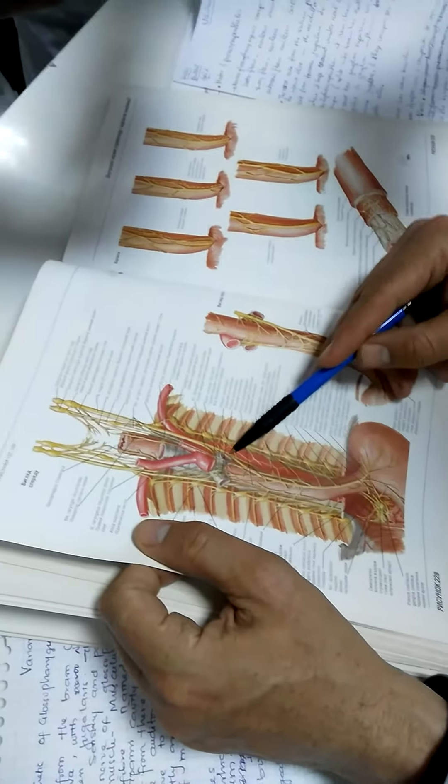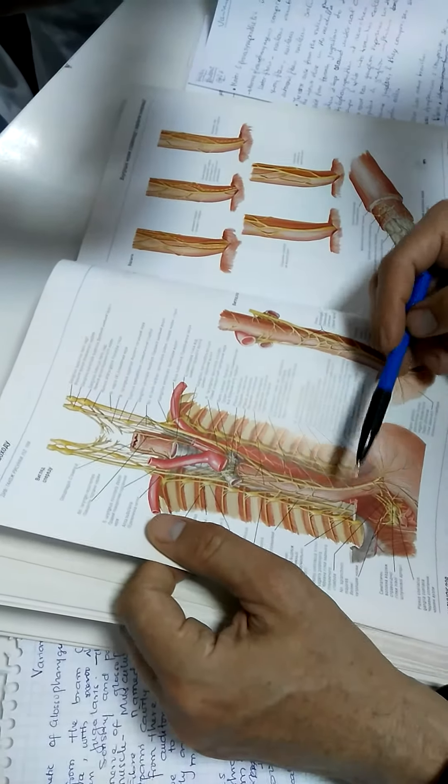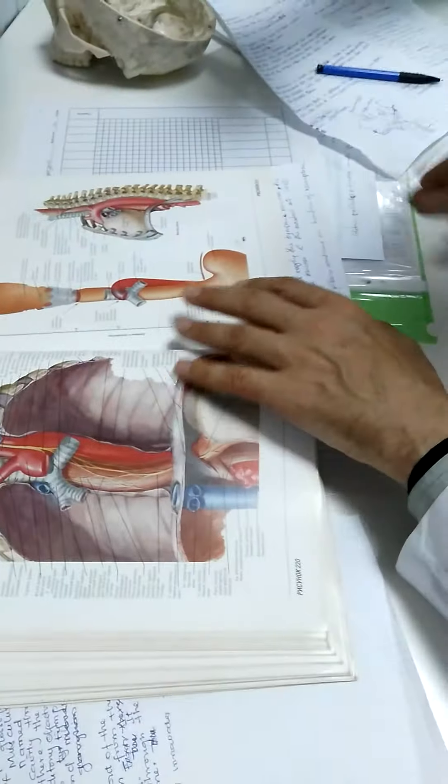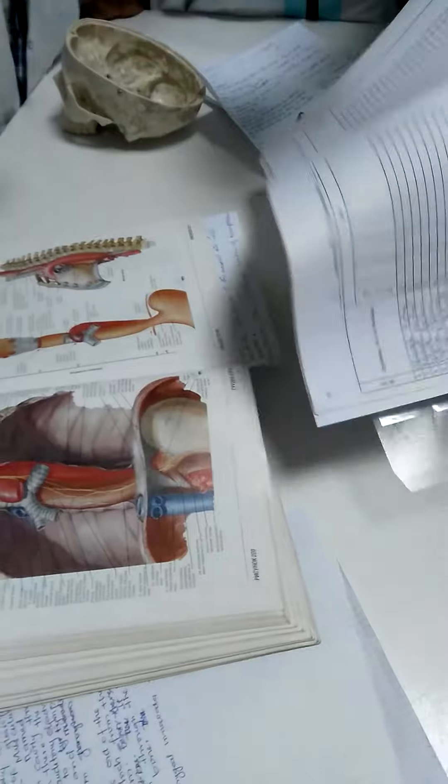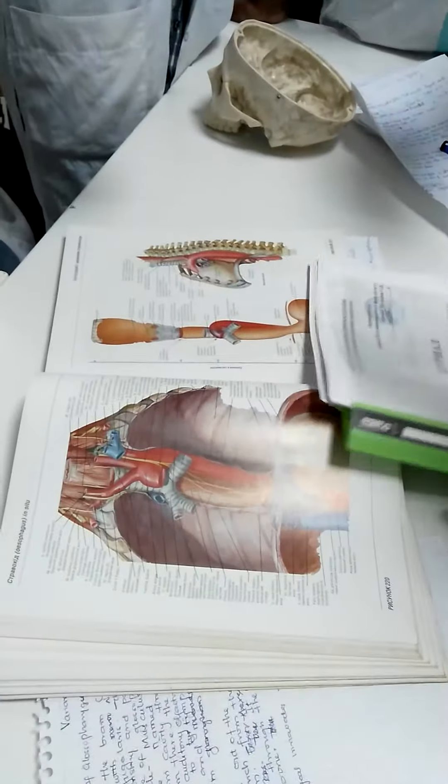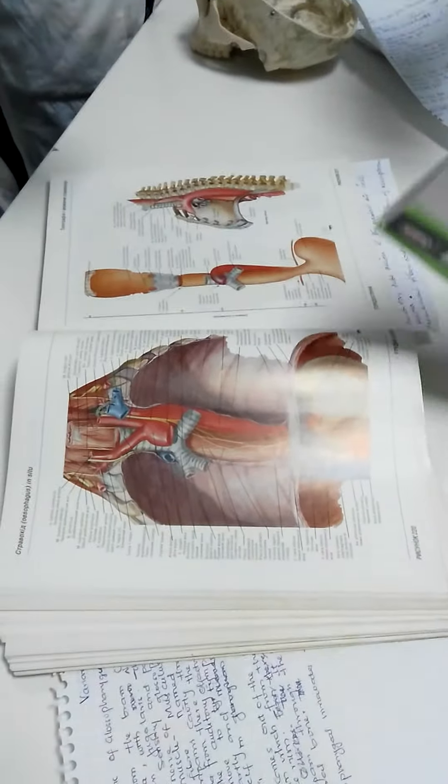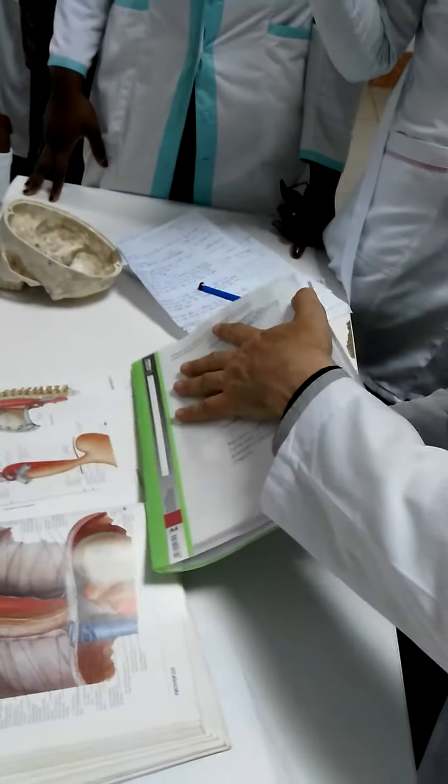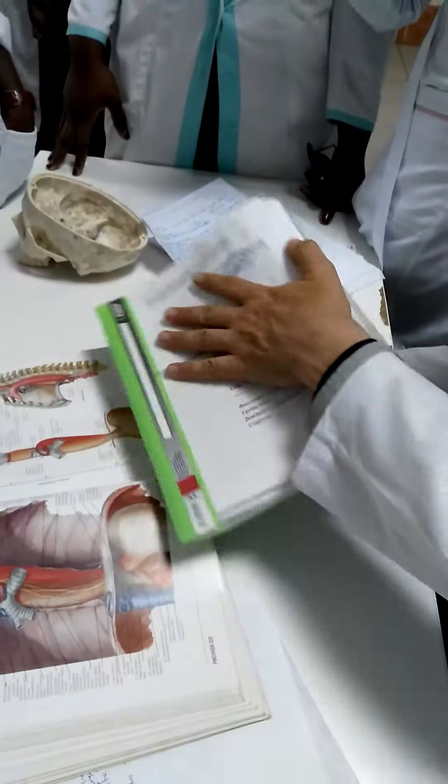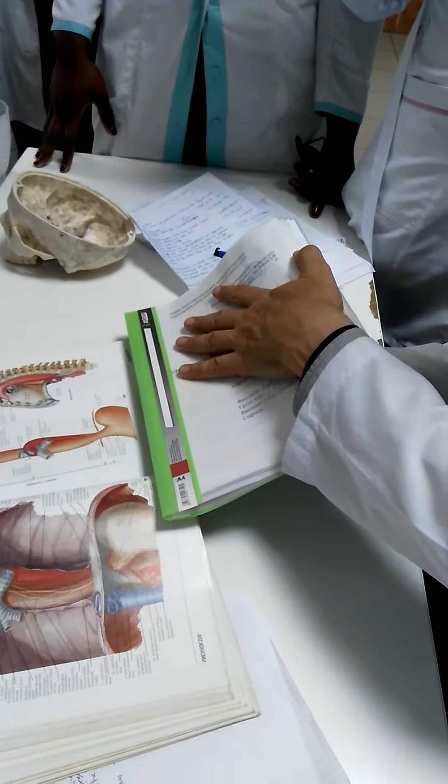Anterior and posterior trunks. Why? The left one goes in the front because at the intrauterine development the stomach changes its position. First it locates in the sagittal plane, then it rotates to the right. And you see, after this rotation my left hand appeared in front.